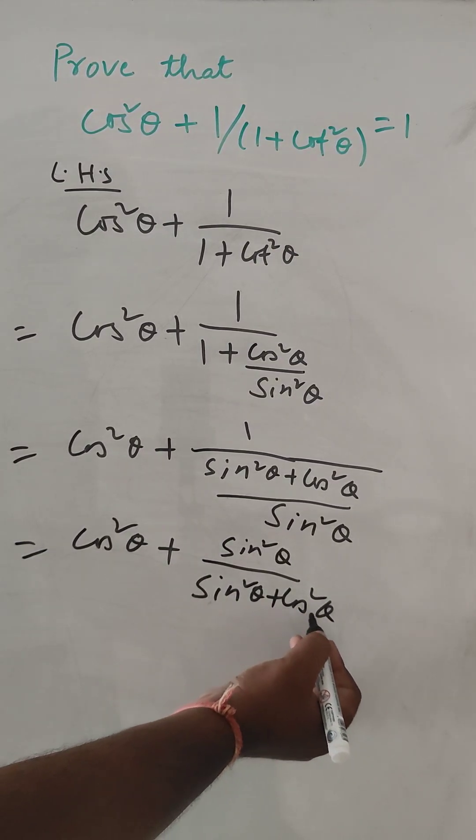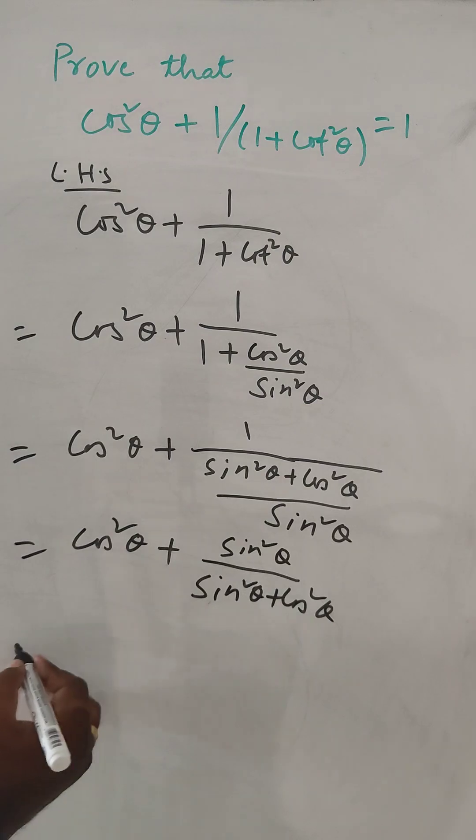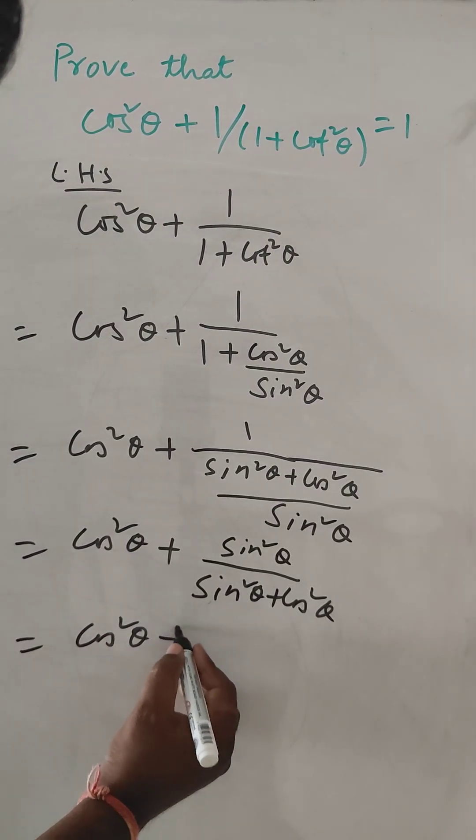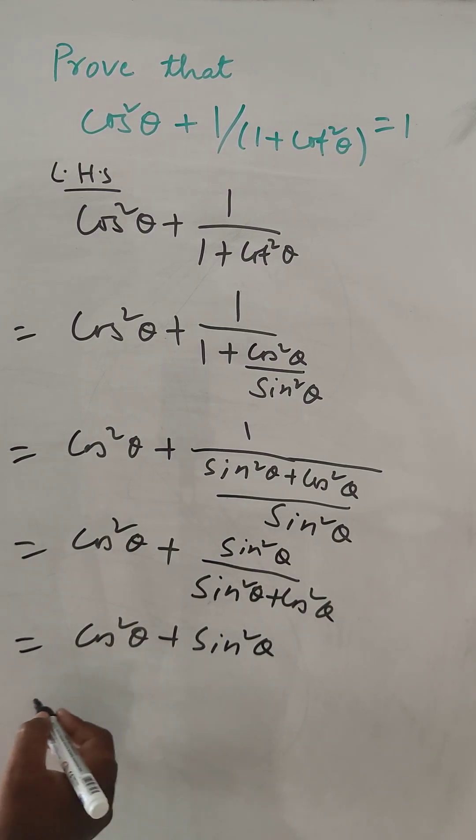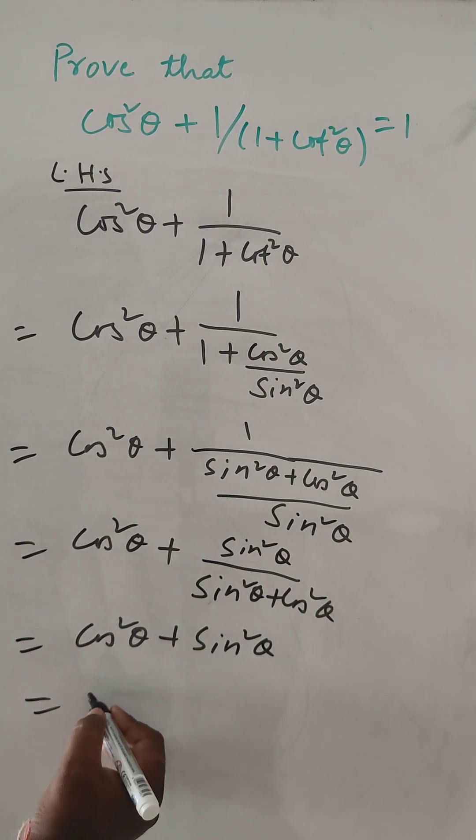So sine square theta plus cos square theta is 1. Then cos square theta plus sine square theta. This is also 1.